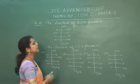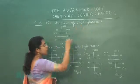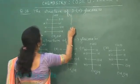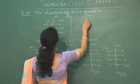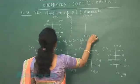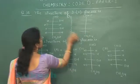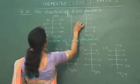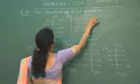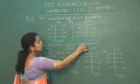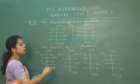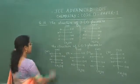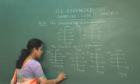To find the answer: D+ glucose and its mirror image is L- glucose, so we will draw the mirror image. The structure drawn includes CHO and CH2OH groups with the appropriate configuration. The structure of L- glucose should be like this. Looking at the four options, the structure of the first option correctly matches the mirror image, so option A is the correct answer.